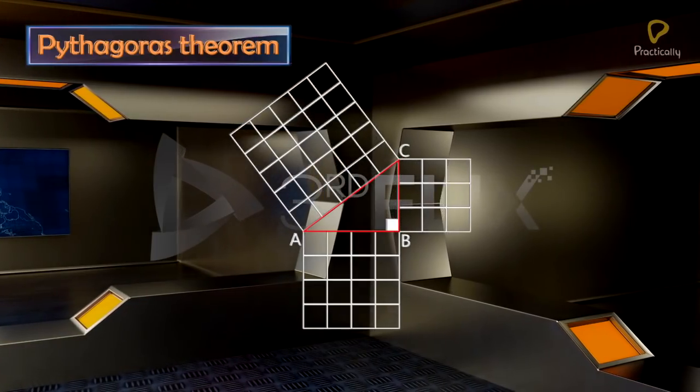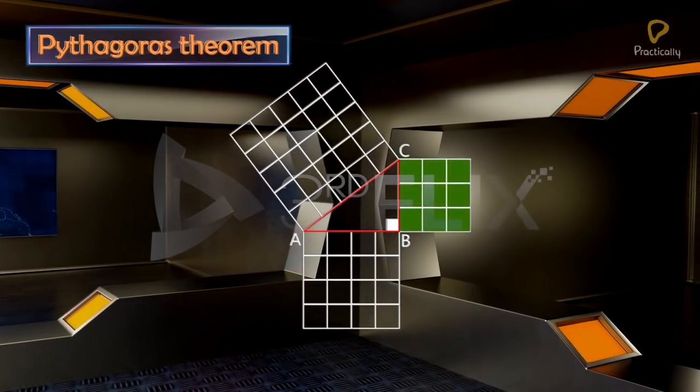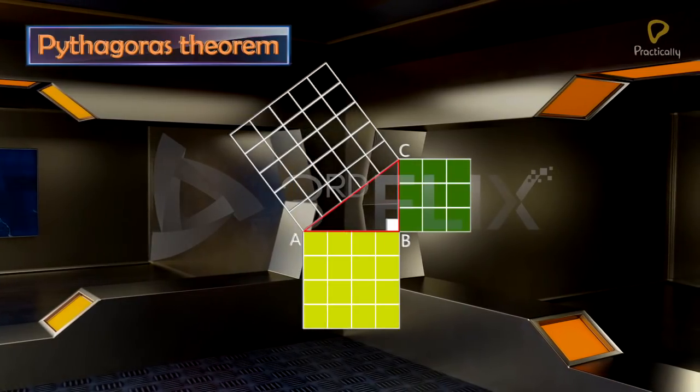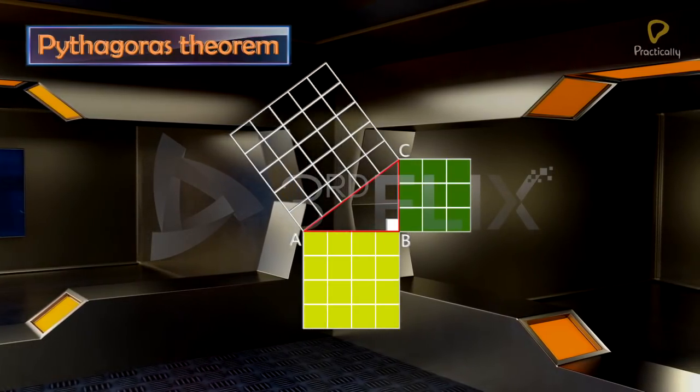Step 2: Color the squares drawn on the legs of the triangle. Step 3: Dissect the squares on the legs into unit squares.